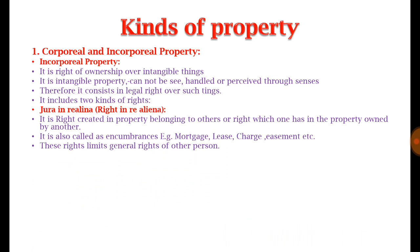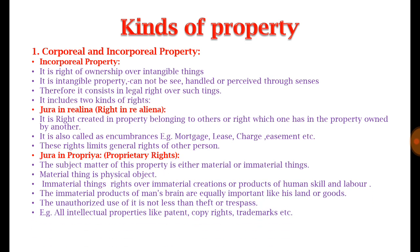Such incorporeal rights are available in two forms: first, jura in re aliena, and second, jura in propria. Jura in re aliena means rights available in a property belonging to another person — the person entitled is not the owner but holds certain rights in that property. Examples include rights created under mortgage, lease, or charge. Such rights work as a limitation on the full property rights of the owner.